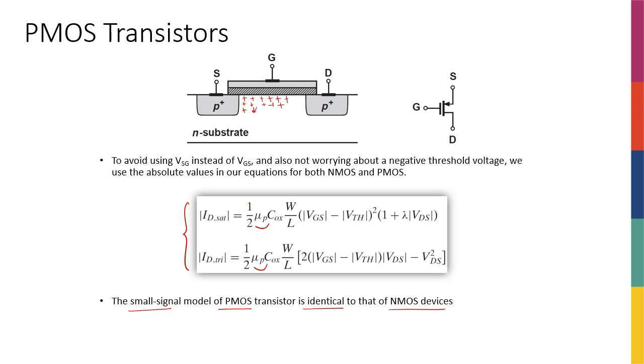I know that the current this time is actually going from source to drain, simply because these are positive charges. This arrow that you have here is really telling you the direction of the current. If it's this way, it means that it's from source to drain. In the case of an NMOS, if you remember, the arrow was really telling you that the current is actually from drain to source.